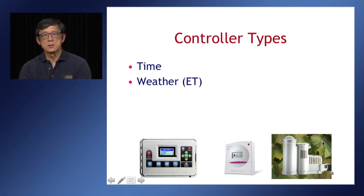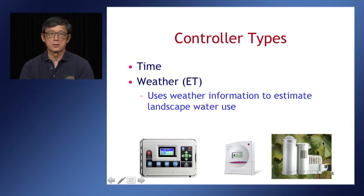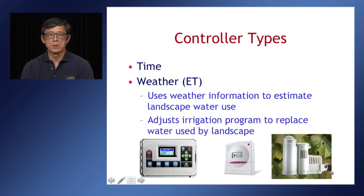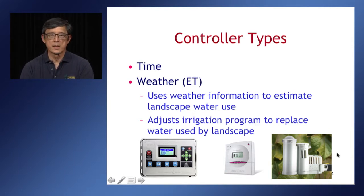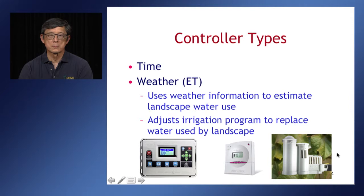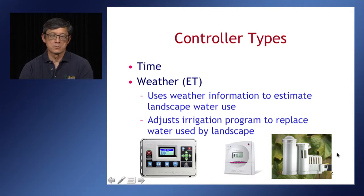Weather-based controllers actually measure or receive information on evapotranspiration, then use that information to estimate how much water the landscape might use, and adjust a program to replace the water calculated to be used. Because it uses weather information, the controller must get that information somehow — some controllers have a small weather station installed, or they may connect to a central information system by telephone or wireless and download that information periodically, probably daily. Once it collects that information, it does calculations based on information programmed by the installer, then adjusts irrigation in response to the weather.